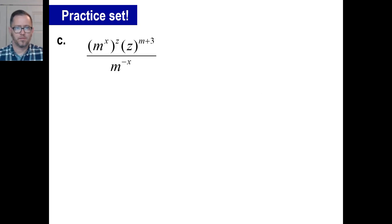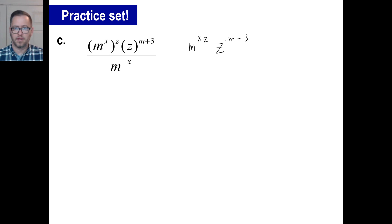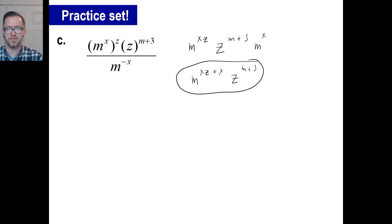Almost forgot problem c. We have m to the x times z, since it's a power to a power. Then z to the — think of it as just a 1 there — so z to the m plus 3. Moving the m to the negative x up, it becomes m to the positive x. Now we have m to the xz plus x, and z to the m plus 3. And there we go.